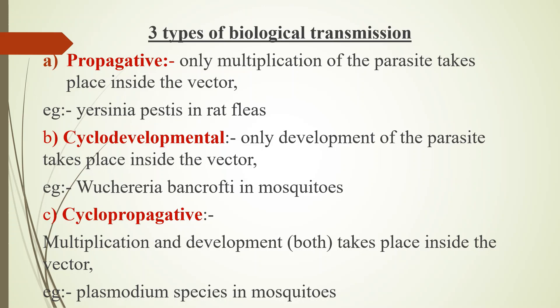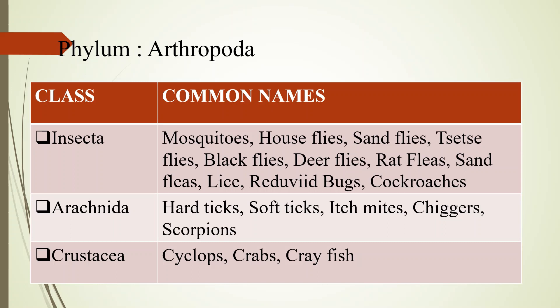Phylum Arthropoda is traditionally classified into five classes, but the medically important classes are three: Insecta, Arachnida, and Crustacea.